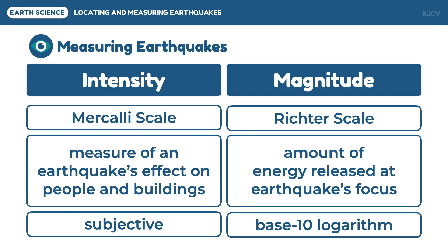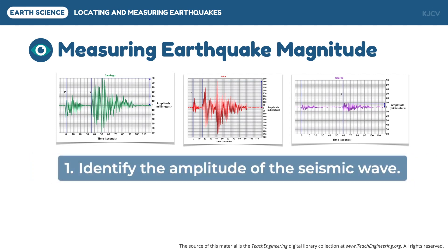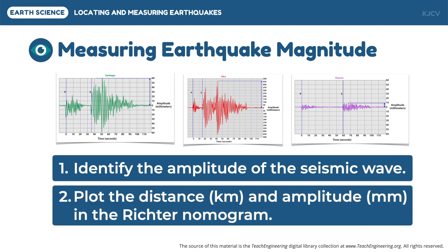Now let us discuss the steps on how to determine the magnitude of an earthquake. In measuring earthquake magnitudes, we first need to identify the amplitude of the seismic wave. After that, we use the Richter nomogram to connect the relationship of the distance and the amplitude. One earthquake record is enough to obtain the magnitude, but more records would result in a more accurate conclusion.